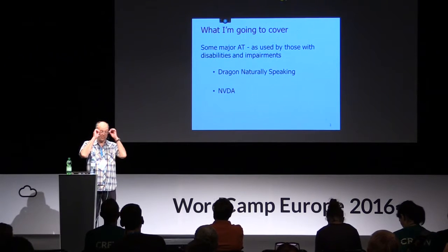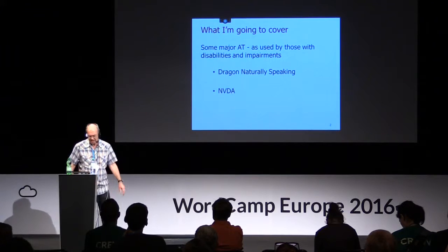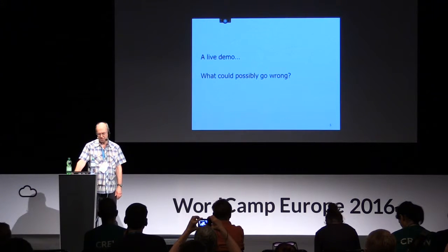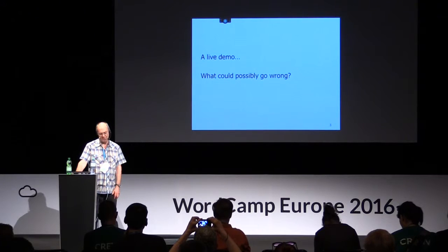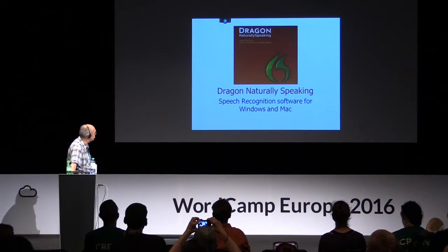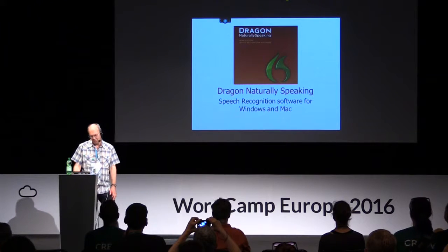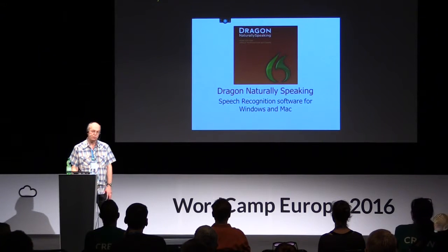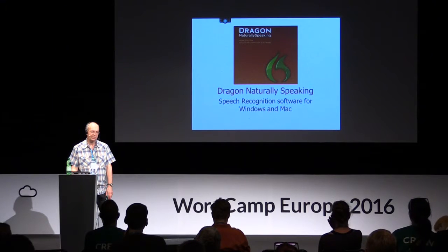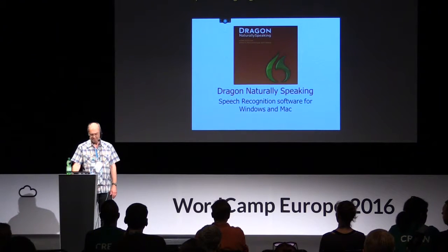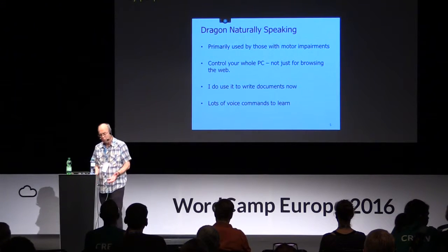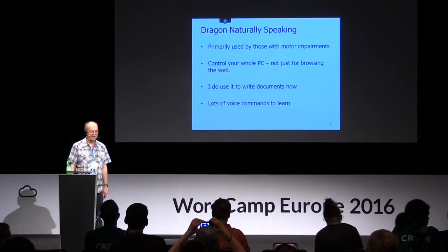Assistive technology comes in a variety of forms. Both of these are software-based tools. Dragon NaturallySpeaking is the one I'll demo first — it's a live demo, so there's always a bit of a gamble. Dragon NaturallySpeaking is speech recognition software for Windows and Macs. It's not currently available on mobile devices, although that will change soon, with a new Android product coming. It's primarily used by people with motor impairments — people who can't, for whatever reason, interact with a keyboard or mouse.